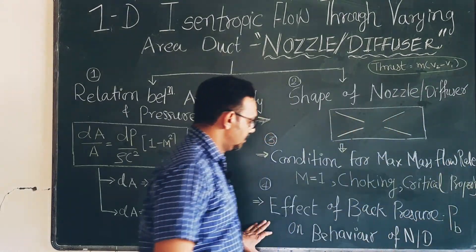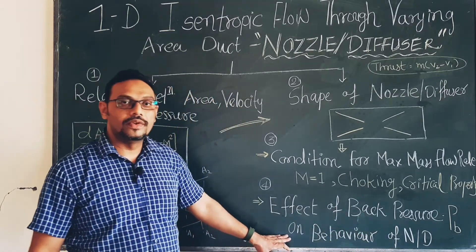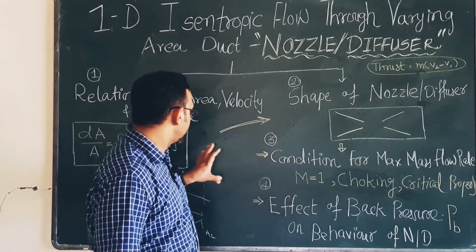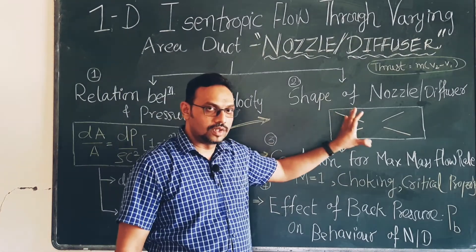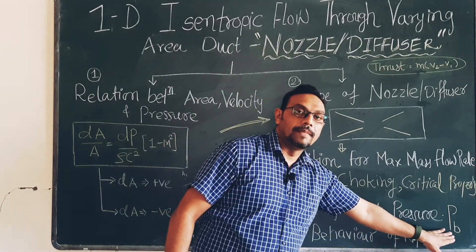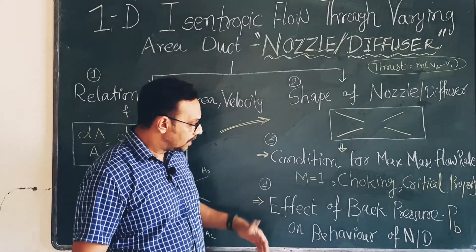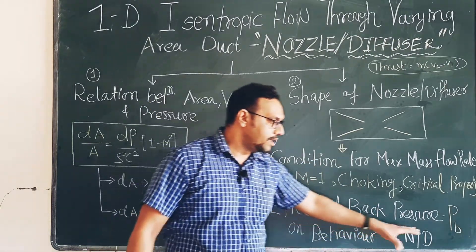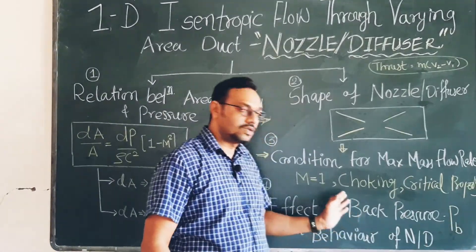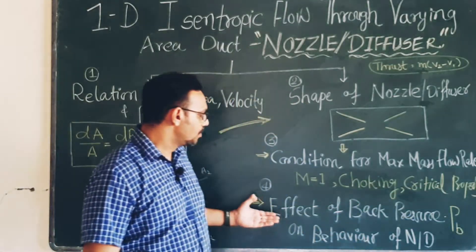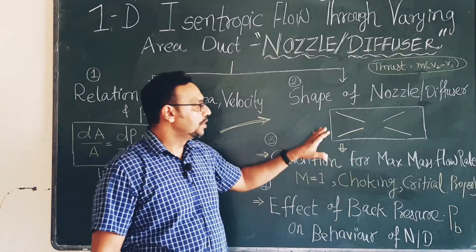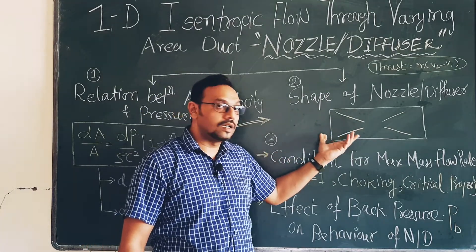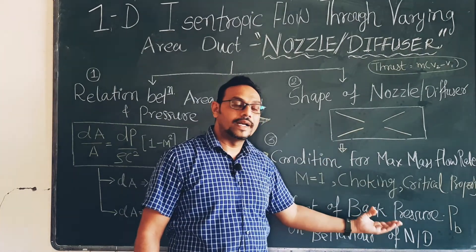The fourth theory covers the effect of back pressure on the behavior of a nozzle or diffuser. Even if you have designed the nozzle shape correctly, if you do not maintain the design back pressure — the pressure downstream of the nozzle — then the nozzle will not function properly. Instead of increasing velocity, it may act like a diffuser and increase pressure if the wrong back pressure is applied.